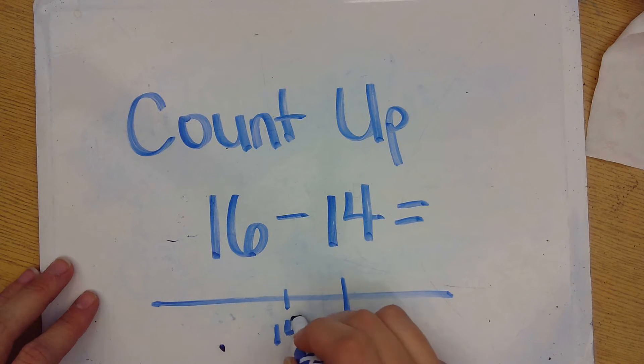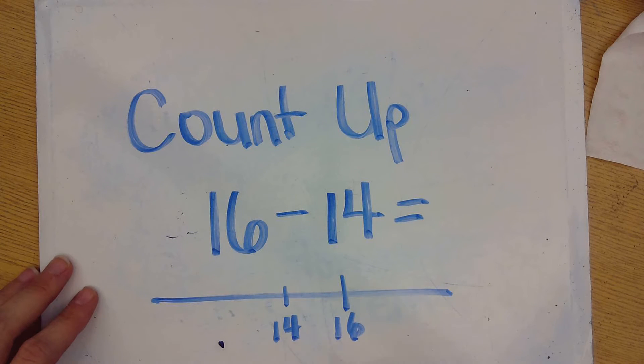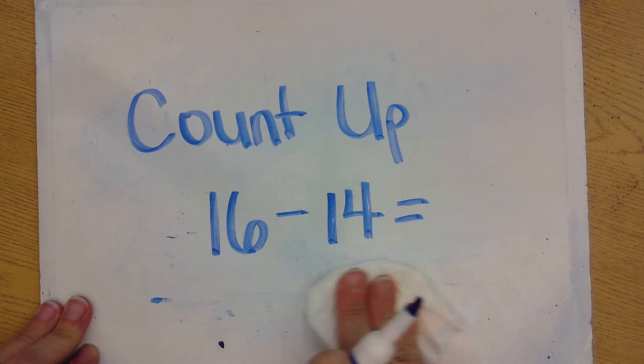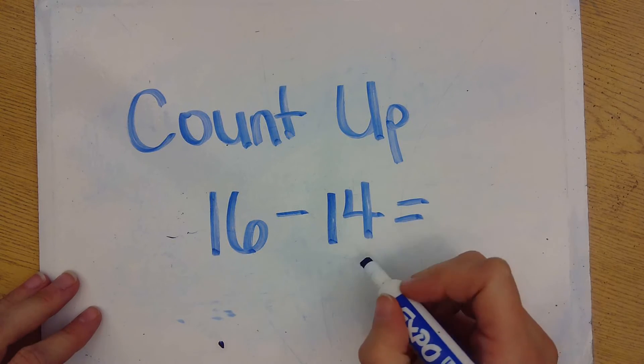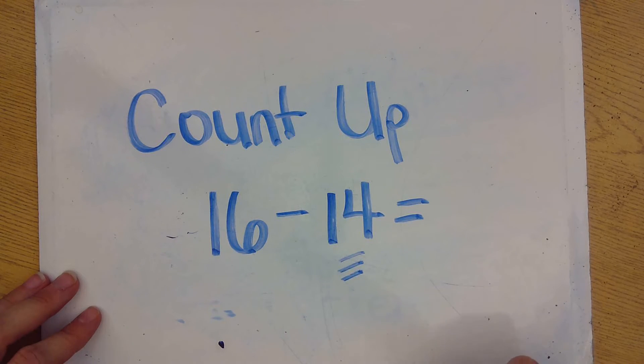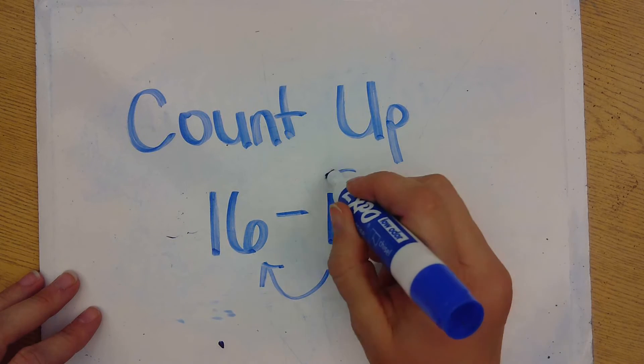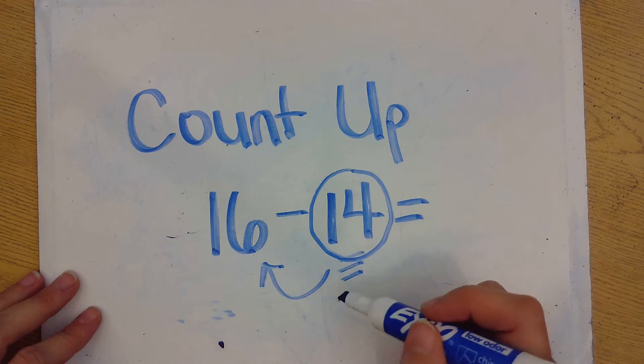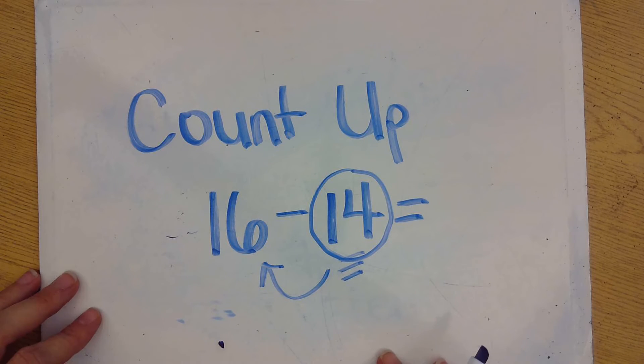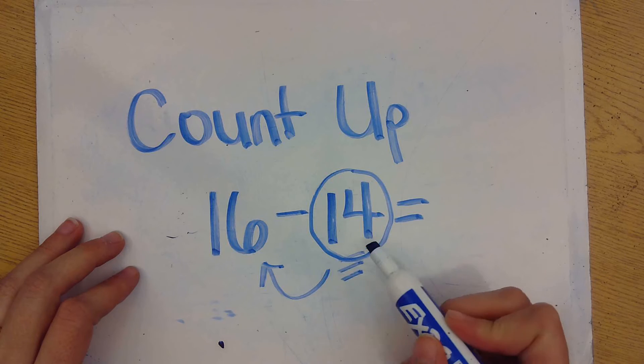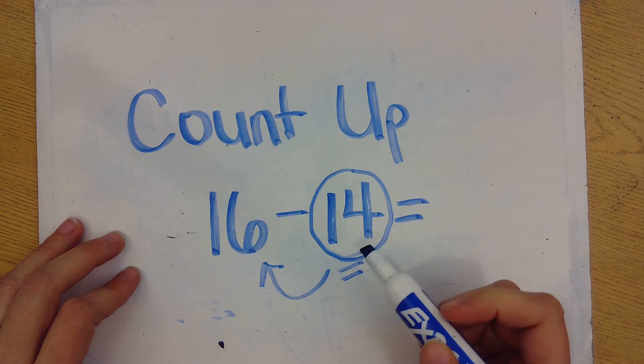So the way that we use the counting up strategy is we start at 14, and we count up until we get to 16. So we put 14 in our heads and count up until we get to 16. It's very similar to the think addition strategy. So let's start at 14 and count up until we get to 16, ready,